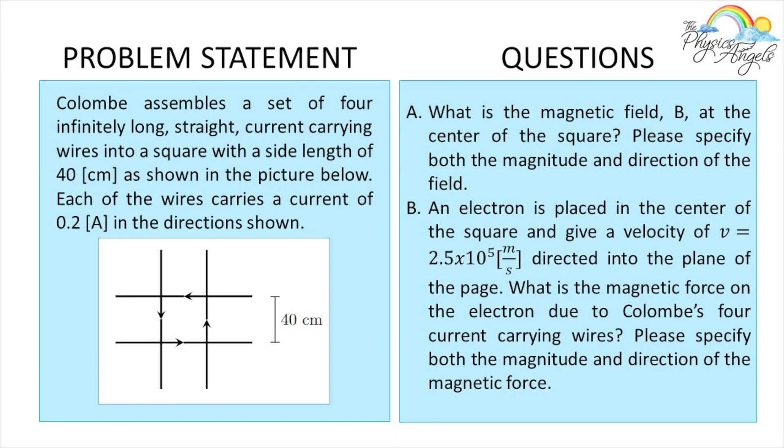And then for part B, we have an electron placed in the center of the square with a certain velocity directed into the plane of the page. What is the magnetic force on the electron due to the four carrying wires? Please specify both magnitude and direction.